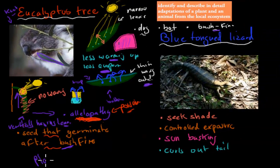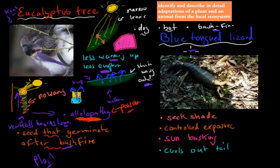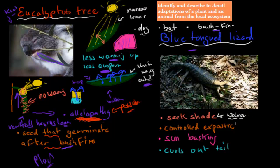That was the eucalyptus tree — our plant — and we've named and described its adaptations. The next organism is the blue-tongued lizard, which we can also find in Sydney. One adaptation is that it can seek shade — a behavioral adaptation. It does this if it's too warm, just like humans who seek shade to stay out of the heat.